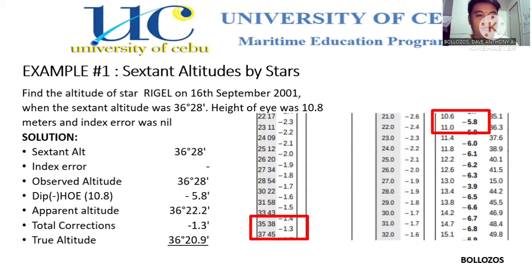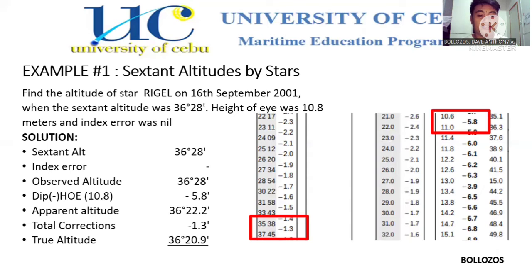Today I'm going to explain the sextant altitude by stars, example number one. We have a given: find the true altitude of star Rigel on the 16th of September 2001, when the sextant altitude was 36 degrees 28 minutes, the height of eye was 10.8 meters, and index error was nil. The sextant altitude is 36 degrees 28 minutes. Since we don't have an index error, we proceed directly to the observed altitude, which is 36 degrees 28 minutes.